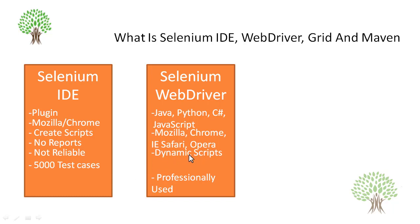What do you mean by dynamic scripts? Suppose a website like CNN.com — it's a news website. Every one hour they update the website, every day the complete website changes. So it's a dynamic website. In order to automate those kinds of websites, Selenium WebDriver helps us a lot. The content is changing very frequently on that site.